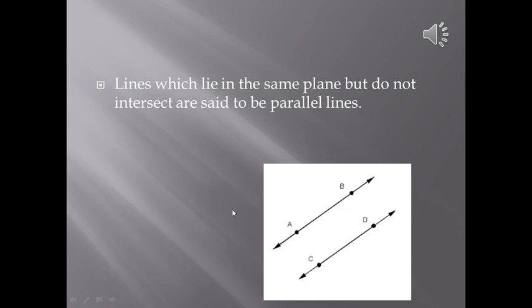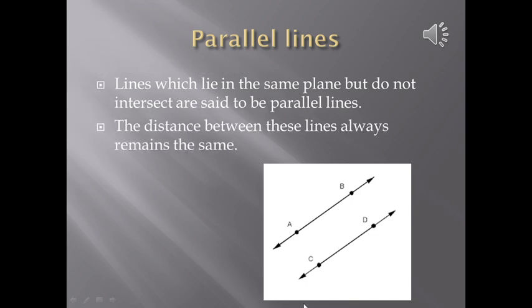Let's learn some more concepts related to lines. Observe the figure given in front of you. Here you will find line AB and line CD. These lines lie in the same plane but they do not intersect or they do not meet each other. Such lines which lie in the same plane but do not intersect are said to be parallel lines. If you observe, the distance between these lines always remains the same.